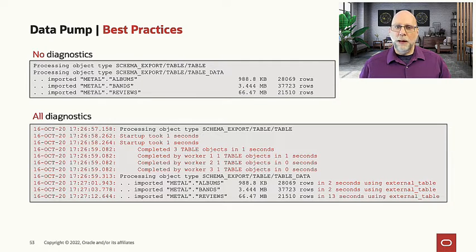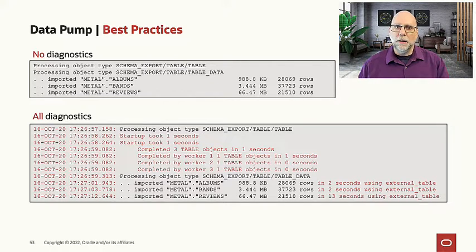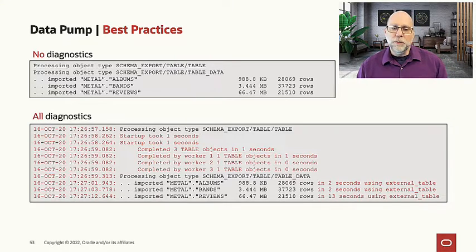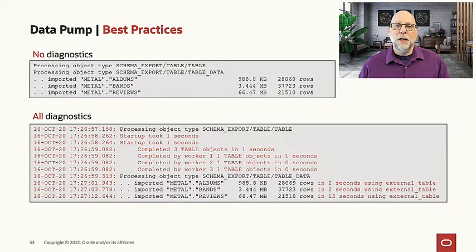If you don't specify those parameters, the default gives you a log file like you see at the top, where you get a sense of what has been imported — for each table, for example, that we've imported the table and how many rows it had. But look at the wealth of information you get by specifying LOG_TIME=ALL, which gives you a timestamp on the left side down to the microsecond, and METRICS=Y, which tells you for each individual table or object not only how long it took but what method was used to move it. We'll talk about those access methods later and see why that's important as well.